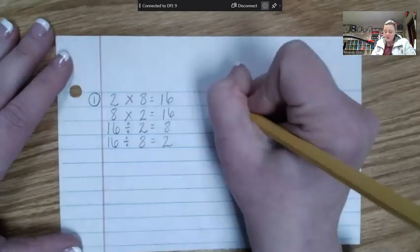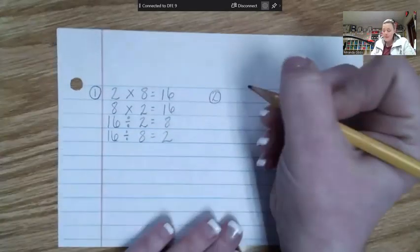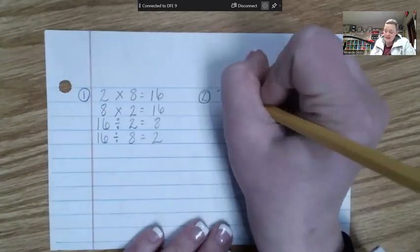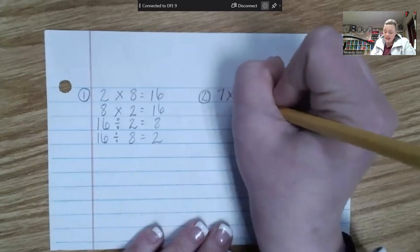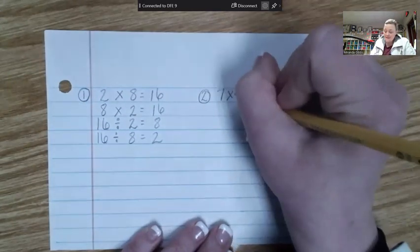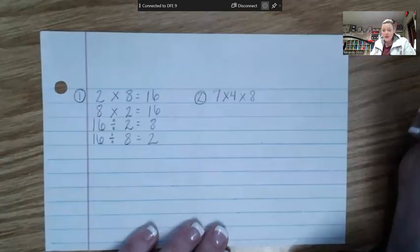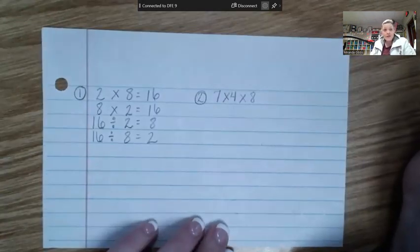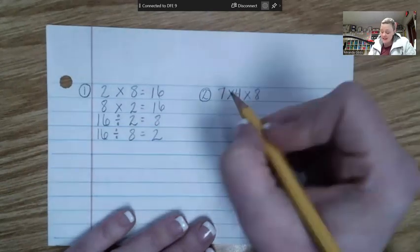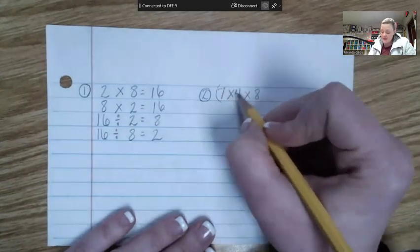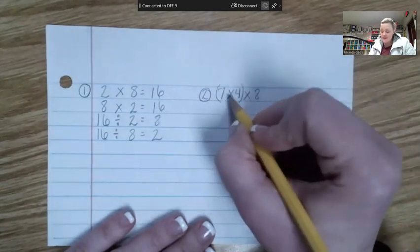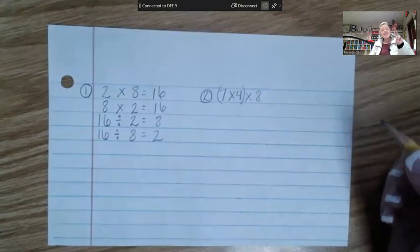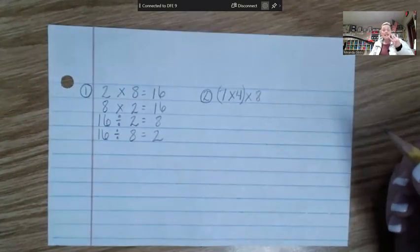Number 2. 7 times 4 times 8. We're going to multiply in any order. So first what we're going to do is start with 4 and 7. 7 times 4. 7, 14, 21, 28, 28.